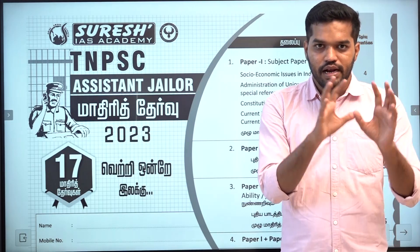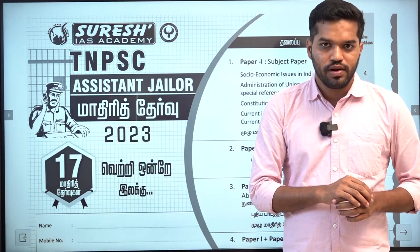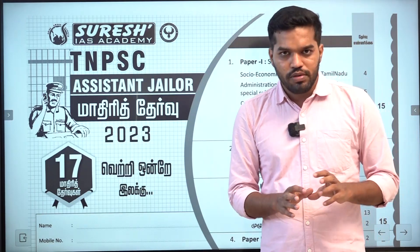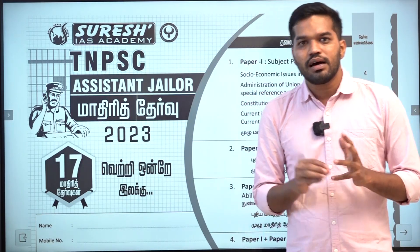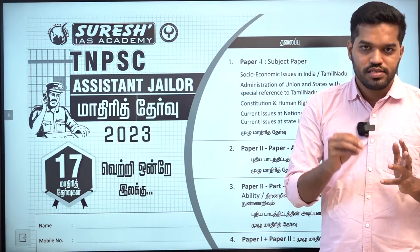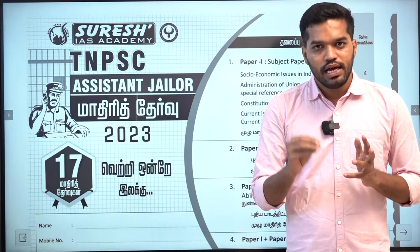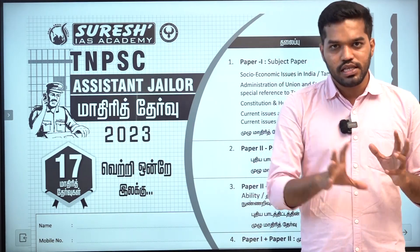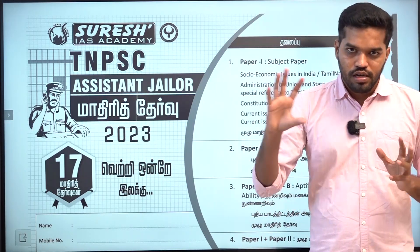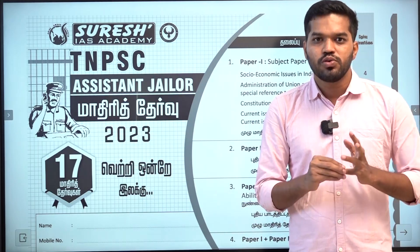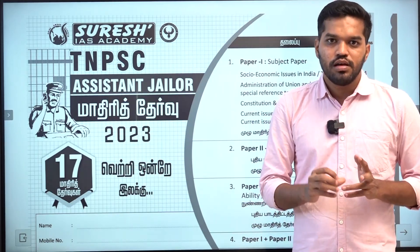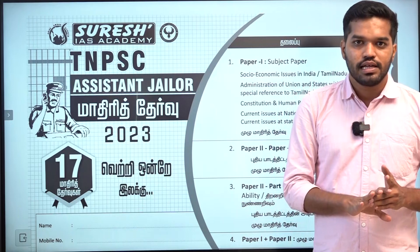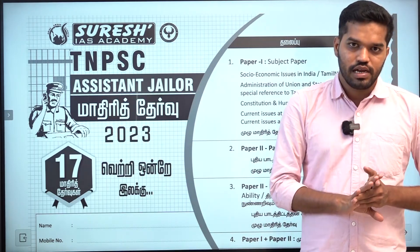We have an object type in this syllabus. In the paper, the general Tamil — the eligibility and merit. You can write 100 questions, plus 25 max, and 25 for the general studies.